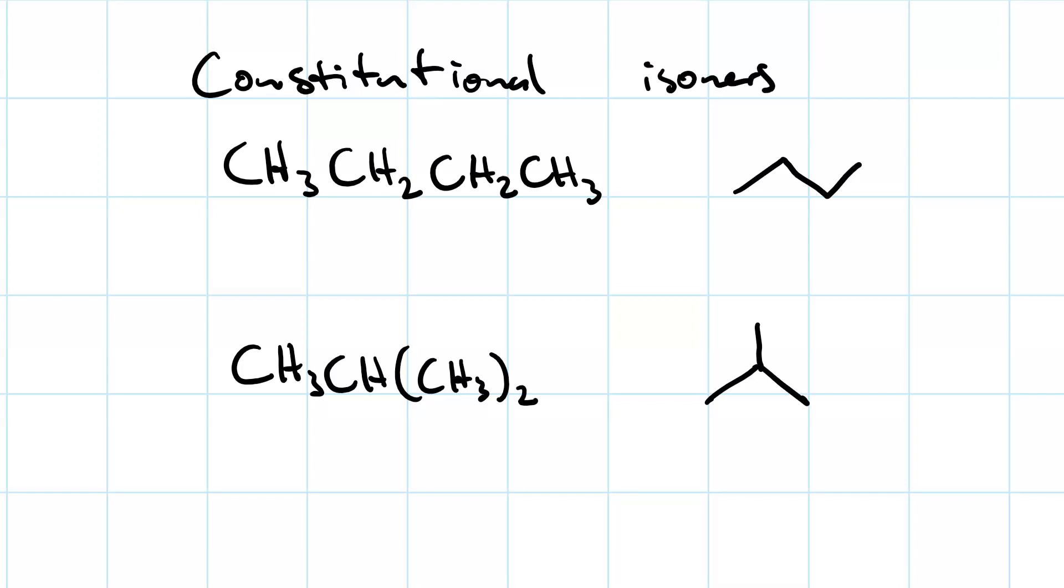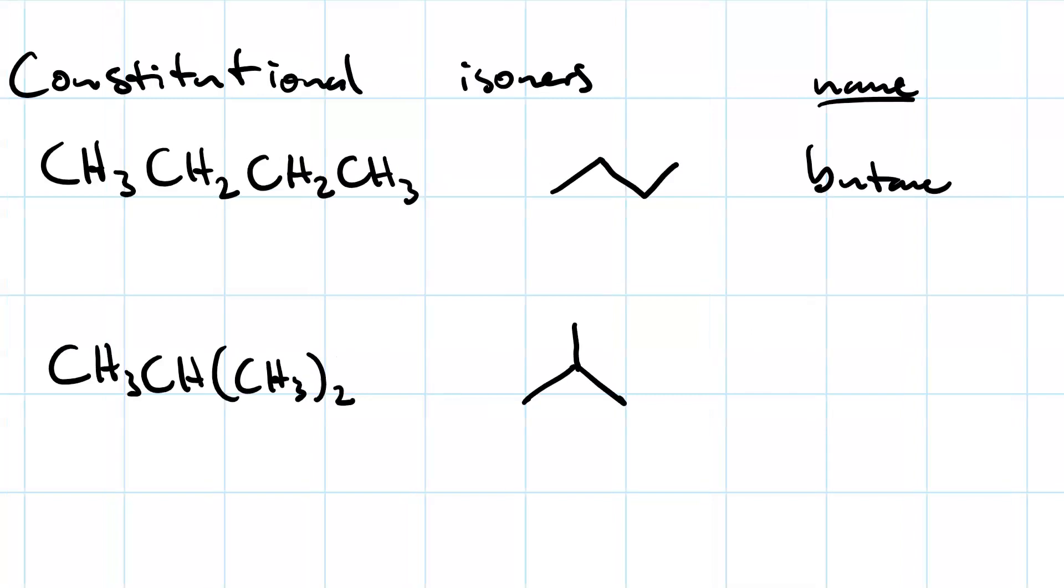When you name them, they each have a different name. The straight compound is named butane. Then the branched compound is 2-methylpropane. 2-methylpropane because its longest carbon-carbon chain has three carbons in it. And we've got this methyl group on carbon two. Note the punctuation. Any time you change from numbers to letters, there will be a dash.